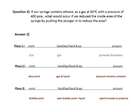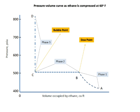Let's look at the chart to explain each phase. In phase one, we have gas in a syringe with no exit. As we move the plunger into the syringe, the pressure increases — however, it is still gas — until we hit the dew point. The dew point is the first point where liquid begins to appear.